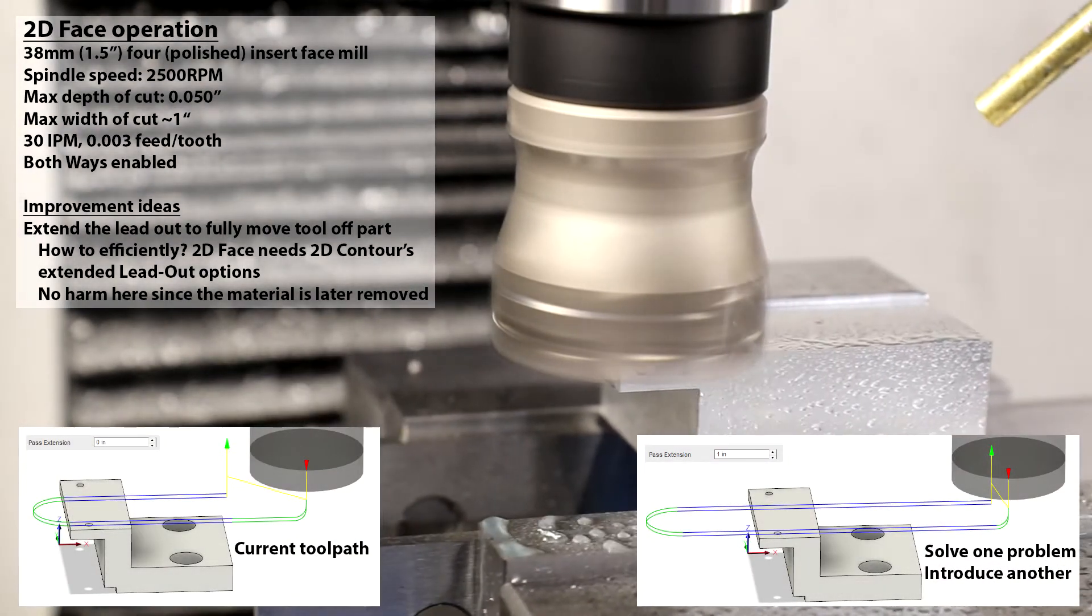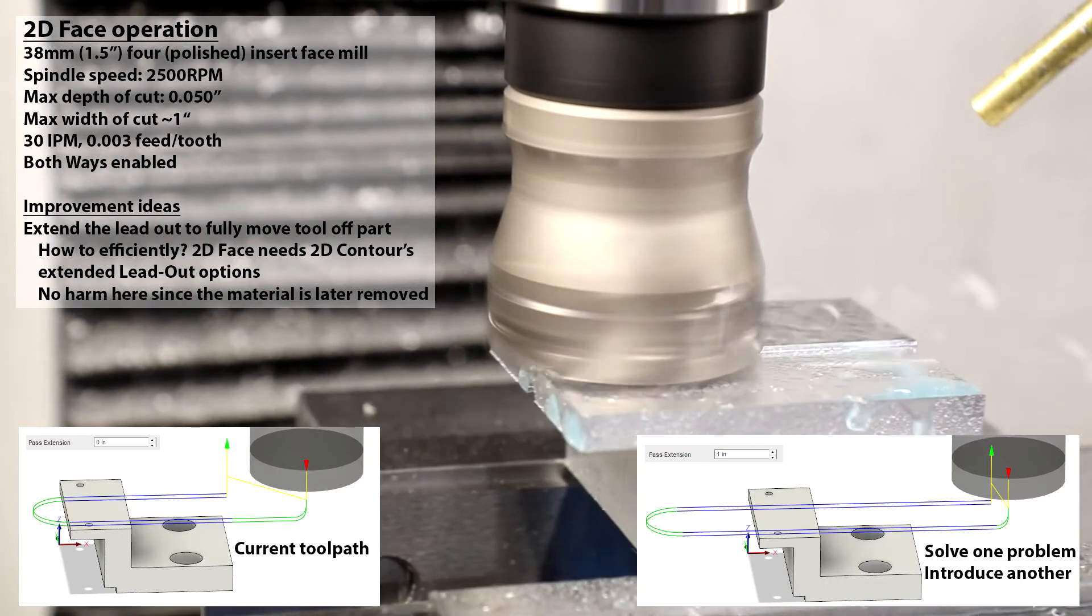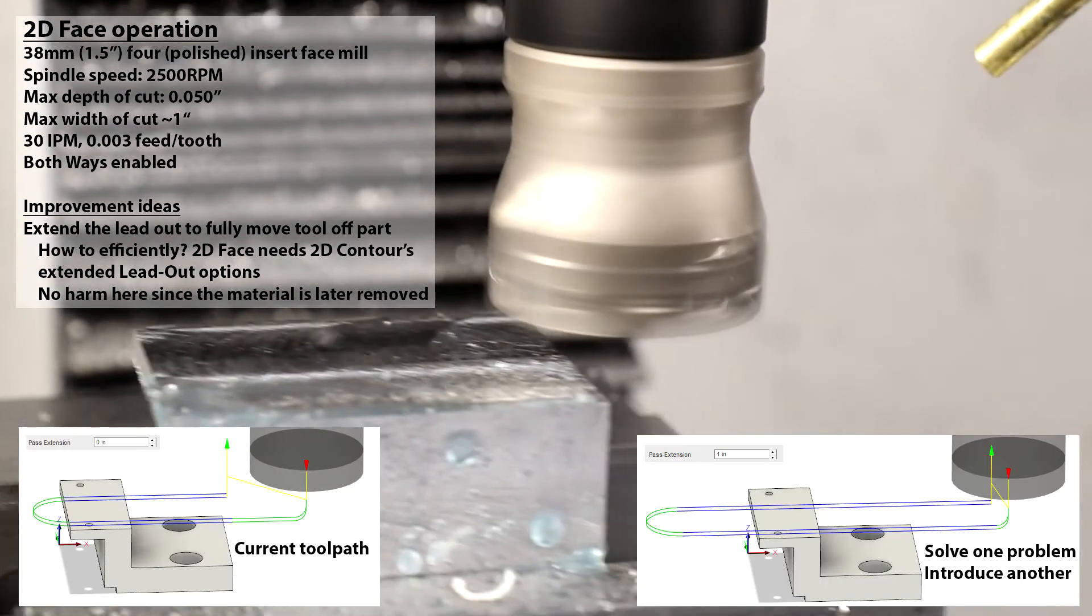What I'm trying to achieve with the toolpath on the right is to not lift the tool off of the part while it's cutting. Unfortunately, with 2D face it doesn't seem to be an option for only lead out extension.